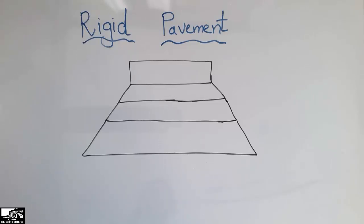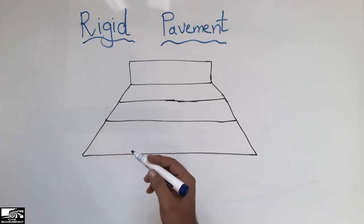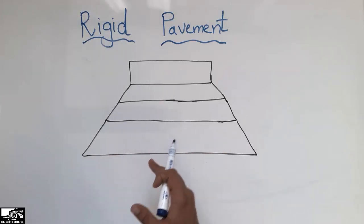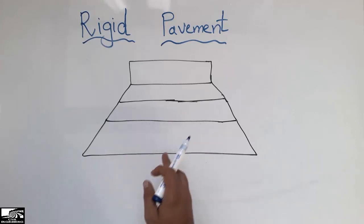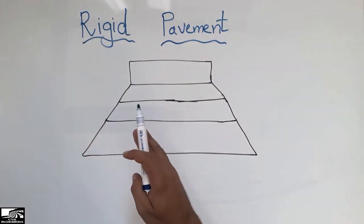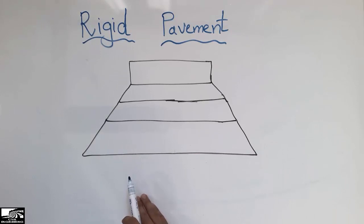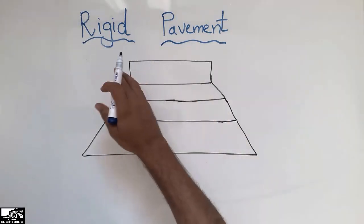Hello guys, welcome back to the civil engineering YouTube channel. Please subscribe for daily civil engineering videos. Today our lecture is about rigid pavement. We have different types of pavement like flexible pavement, rigid pavement, and green owner pavement, but the main types are flexible and rigid. For the video about flexible pavement, go to my channel — I also put the link in the description about the difference between flexible and rigid pavement.